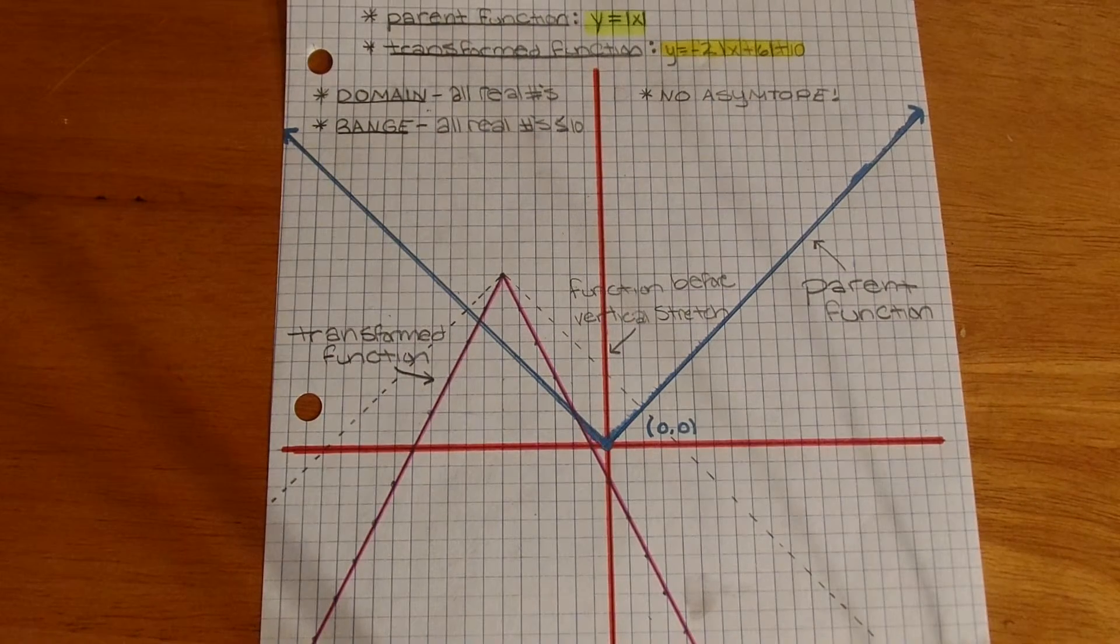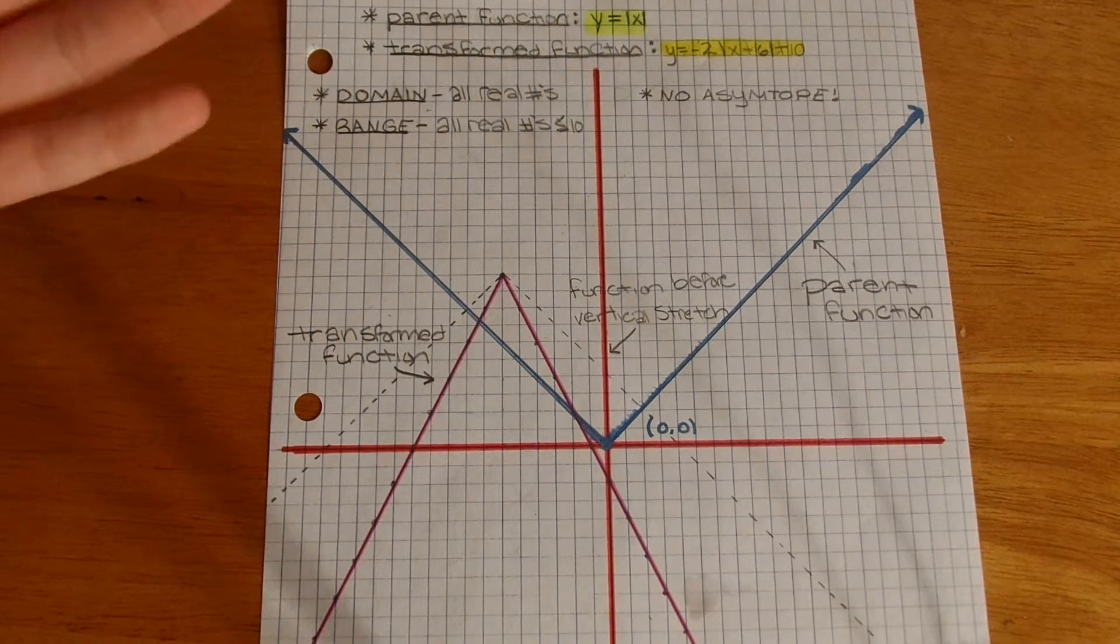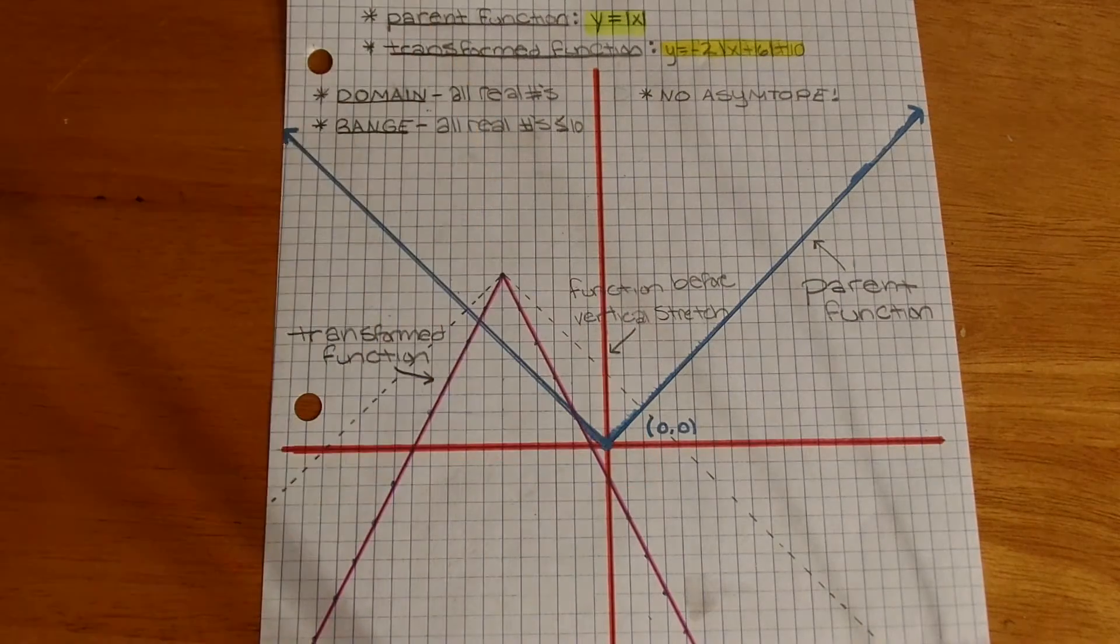And then since there's a negative sign, you would take the function and flip it upside down, which would be the dotted line here.